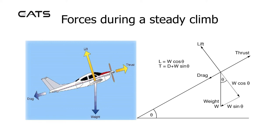The force opposing lift is weight cosine theta, and the force opposing thrust is weight sine theta plus the drag, where theta is the climb angle.